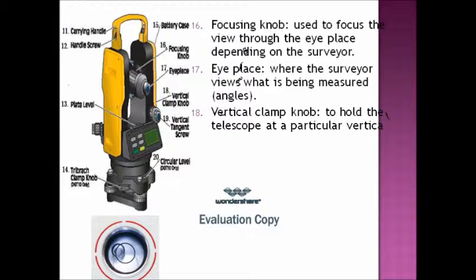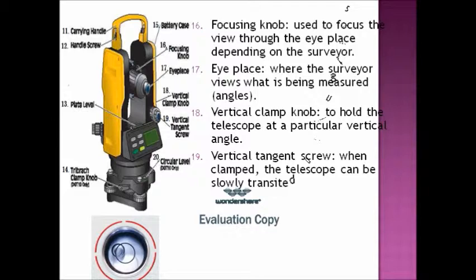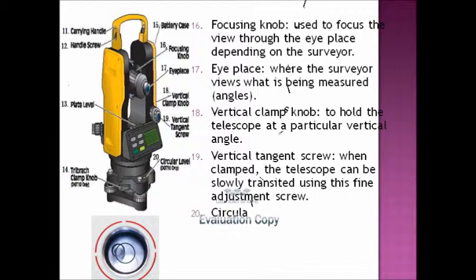The vertical clamp knob is used to hold the telescope at a particular vertical angle. The vertical tangent screw. When clamped, the telescope can be slowly transited using this fine adjustment screw.